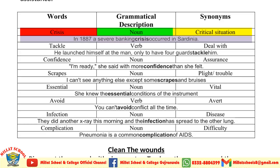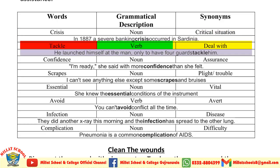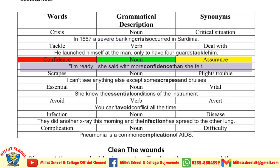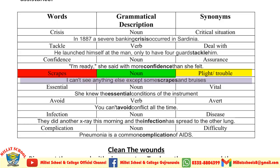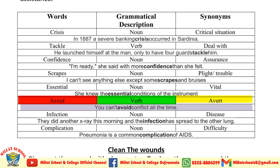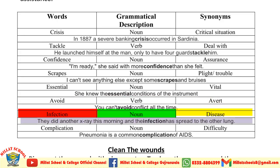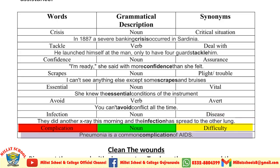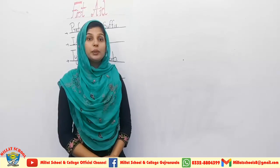Here are the main important words from this passage. 'Crisis' (noun), synonym: 'critical situation.' Example: 'In 1887 a severe banking crisis occurred in Sardinia.' 'Tackle' (verb), synonym: 'deal with.' 'Confidence' (noun), synonym: 'assurance.' Example: 'I am ready, she said with more confidence than she felt.' 'Scraps' (noun), synonym: 'right applied and trouble.' Example: 'I can't see anything else except some scraps and bruises.' 'Essential' (noun), synonym: 'vital.' 'Avoid' (verb), synonym: 'avert.' Example: 'You can't avoid conflict all the time.' 'Infection' (noun), synonym: 'disease.' 'Complication' (noun), synonym: 'difficulty.' Example: 'Pneumonia is a common complication of AIDS.'